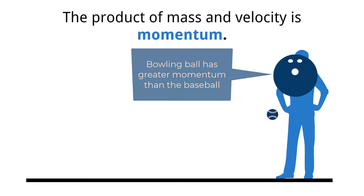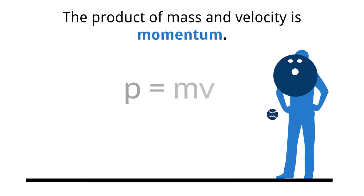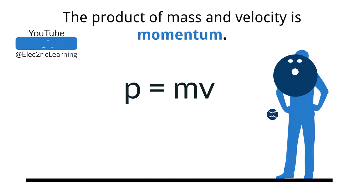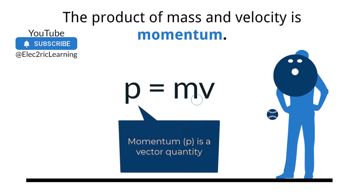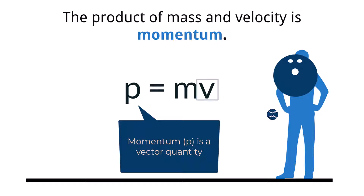To calculate the momentum of either object, you would find the product of the mass and velocity of the object. Importantly, momentum is a vector quantity, and the velocity not only contributes to the magnitude of the momentum, but also is the indicator of the direction of the momentum.